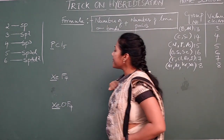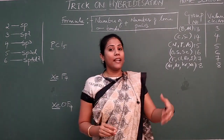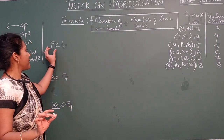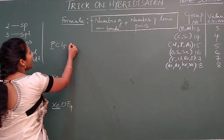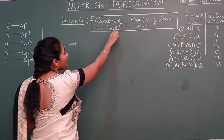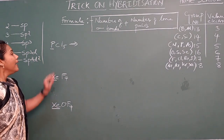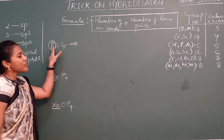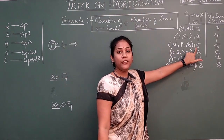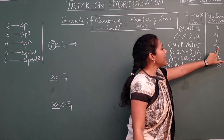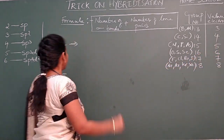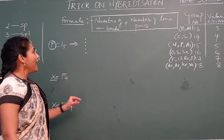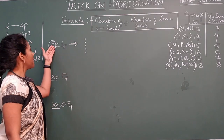Now let us work out example PCl5. We are finding phosphorus hybridization. Apply the trick: number of sigma bonds plus number of lone pairs. The central element is phosphorus, which belongs to group 15 and has 5 valence electrons. So we put 5 dots, representing the 5 valence electrons of phosphorus.